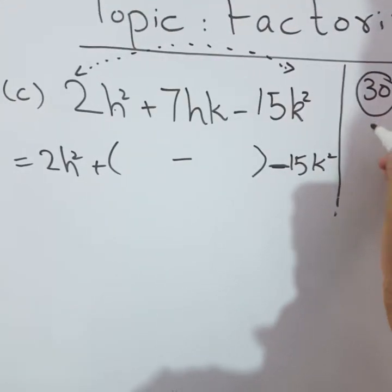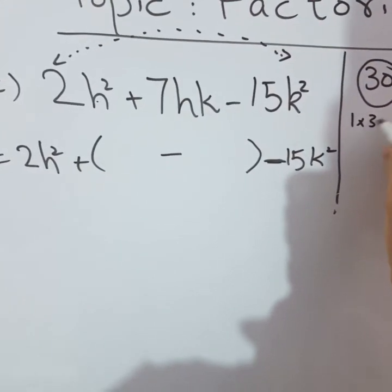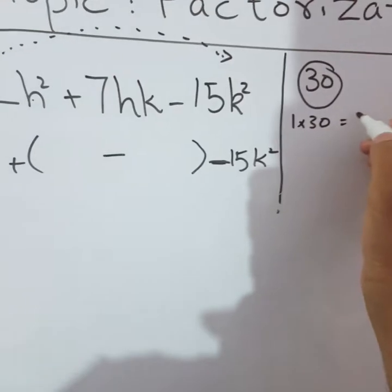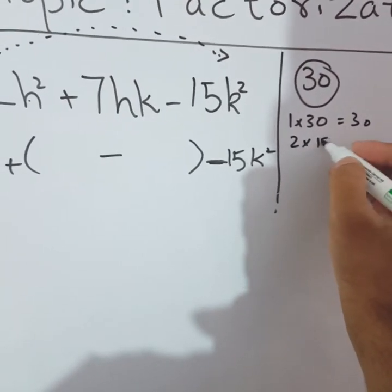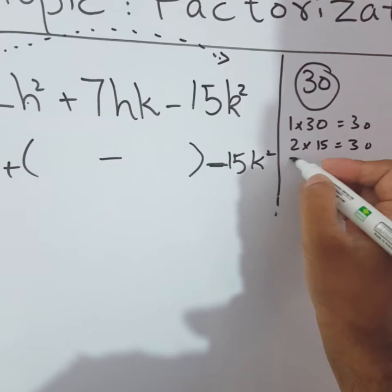Now you need to see which tables 30 comes in. First of all, it comes in one's table - 1 times 30 equals 30. Then 2 times 15 equals 30, and 3 times 10 equals 30.